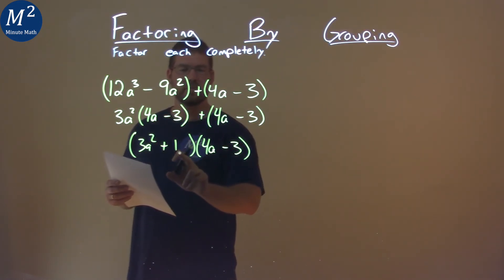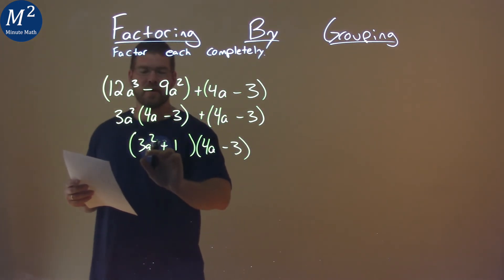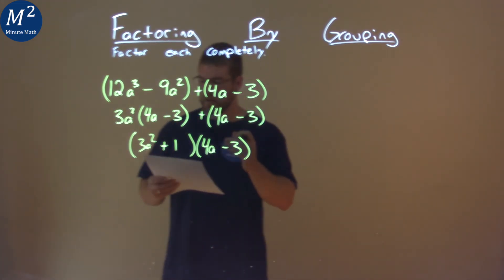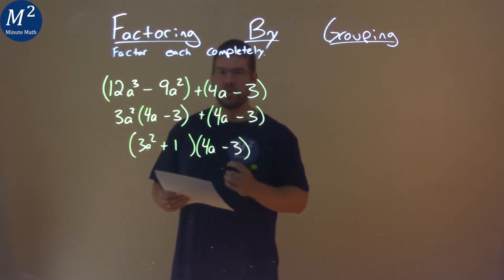There's a plus 1, right? The 1 that's right in front, multiplied by 1, and then 3a squared. And so, our final answer here is 3a squared plus 1 times 4a minus 3.